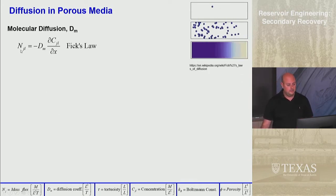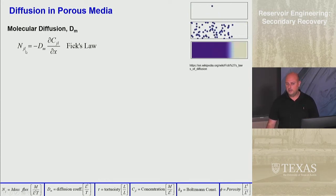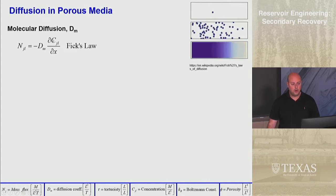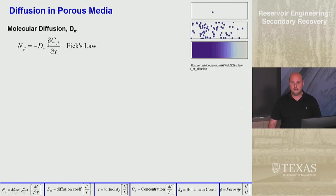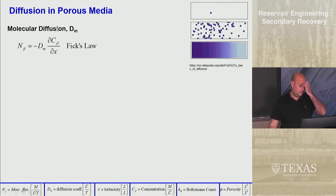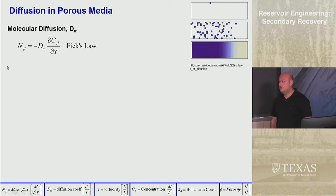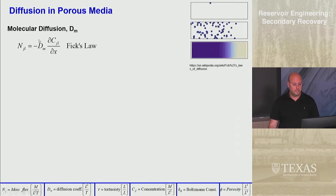Fick's Law says that the flux of component J in phase L is equal to minus the diffusion coefficient times the gradient in concentration of component J in phase L with respect to X — that's the 1D form. Component J could be salt, a tracer, or CO2; phase L could be the aqueous, oleic, or gaseous phase. This flux has units of mass per area per time — any flux is almost always some amount per area per time.